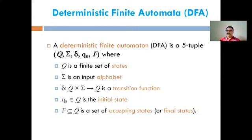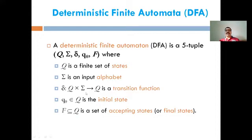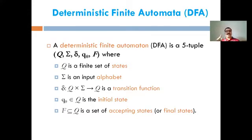The important part is the transition function delta, which operates on a state as well as an input, allowing movement through the diagram. Q0 is the initial state — it is noted that in any machine the initial state must be a single state. So Q0 is only one state, and it is also part of capital Q, the set of all states.